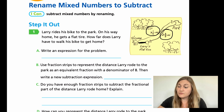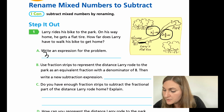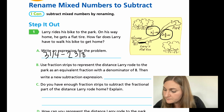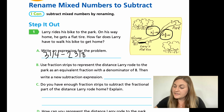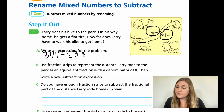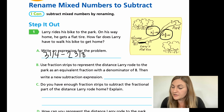For A, write an expression. We're going to start with three and one fourth and subtract two and three eighths. For B, use fraction strips to represent the distance Larry rode to the park as an equivalent fraction with a denominator of eight, then write a new subtraction expression.